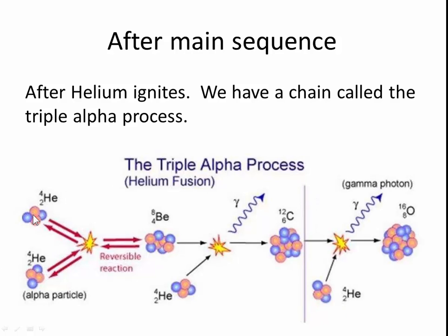This is the triple alpha process because you have alpha plus alpha plus alpha to make carbon-12. This is what happens in the helium burning part of the star's lifetime to produce carbon. But then you can also produce oxygen with more helium.